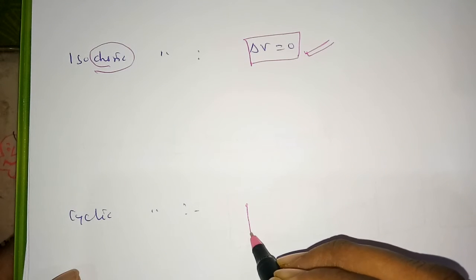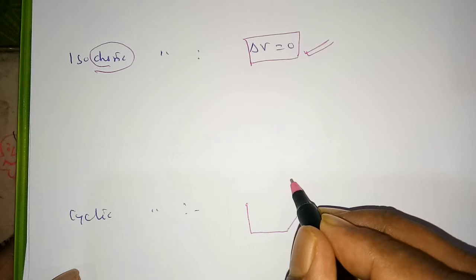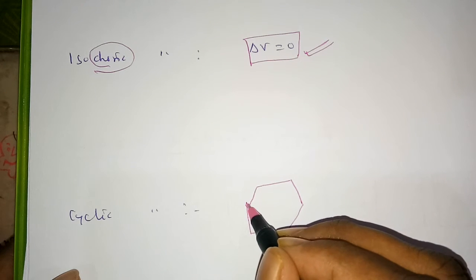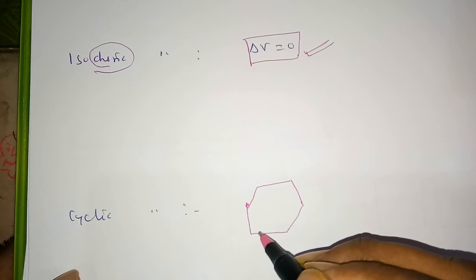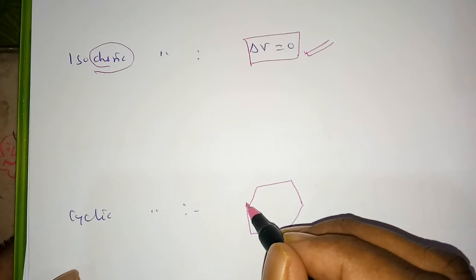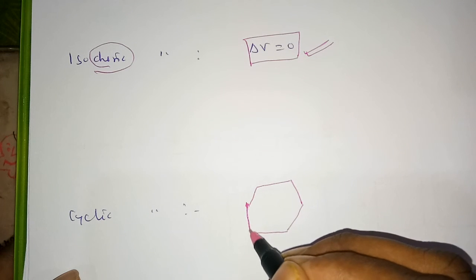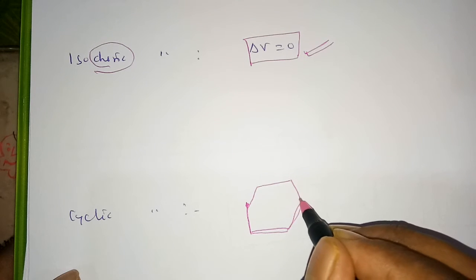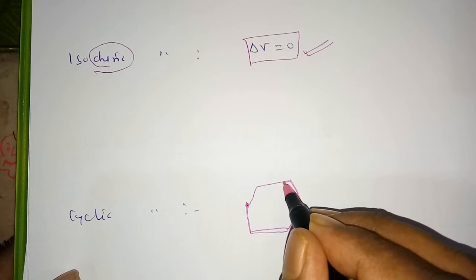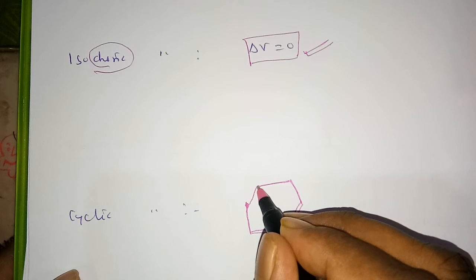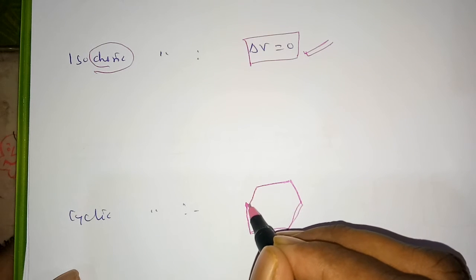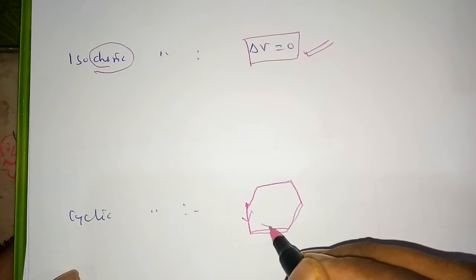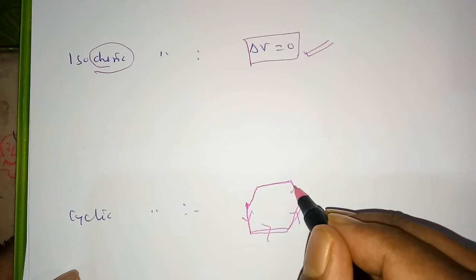Then we have the cyclic process. If a process starts from a point and ends at the same point again, it is called a cyclic process. For example, you start from your home, go to school, go to tuition, go to the market, and then come back to your home. This type of process is called a cyclic process.